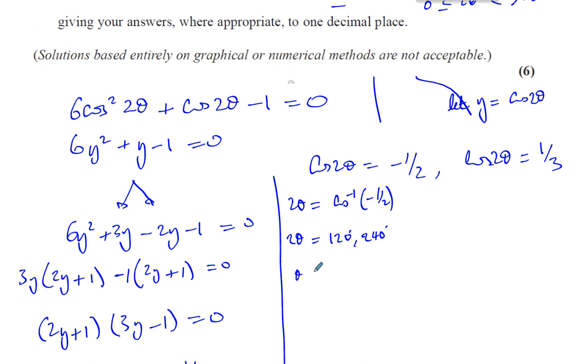So that means: since we want θ, not 2θ, we divide by 2. We get θ = 60° and θ = 120°. Those are the solutions from the first part.